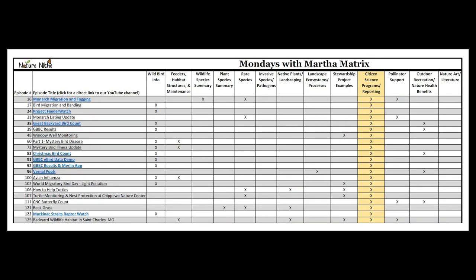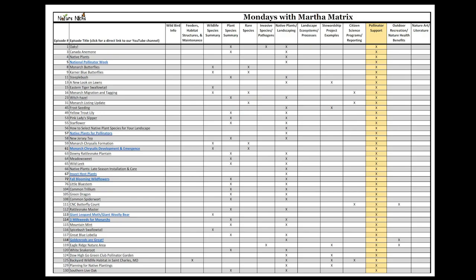There's a category for citizen science programs and reporting — things like monarch migration and tagging, participating in Journey North, watching birds through Project FeederWatch, the Great Backyard Bird Count, the Christmas Bird Count, vernal pool patrol, and the Mackinac Straits Raptor Watch.